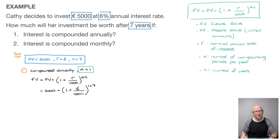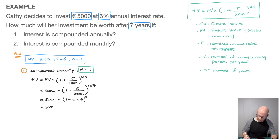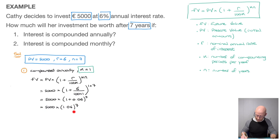Since 100 times 1 is just 100, the fraction is 6 over 100 which is 0.06. This quickly becomes 5,000 times (1 plus 0.06) raised to the power of 7. Adding 1 to 0.06, this equals 5,000 times 1.06 raised to the power of 7. I deliberately showed this working because this last line showcases exactly what's happening when interest is compounded annually for seven years.